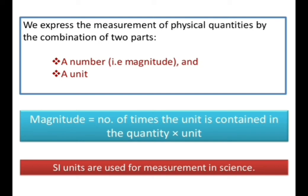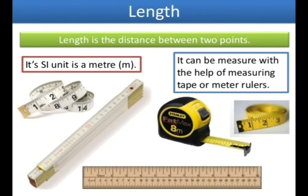All measurements done in science use the SI unit. SI unit is the short form of Standard International. The SI unit is accepted internationally, so normally we use the Standard International unit to measure all physical quantities.